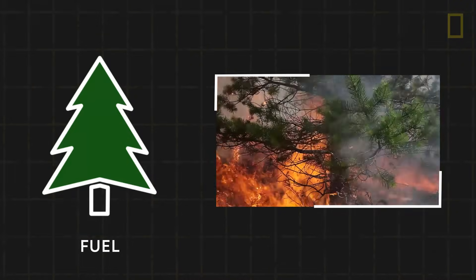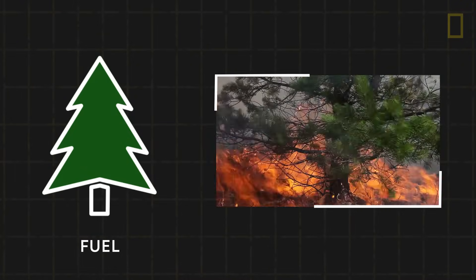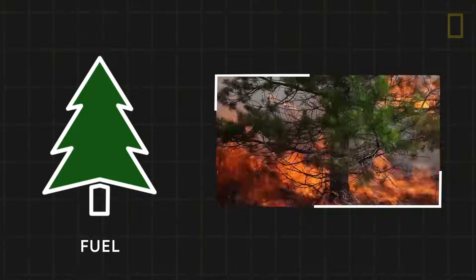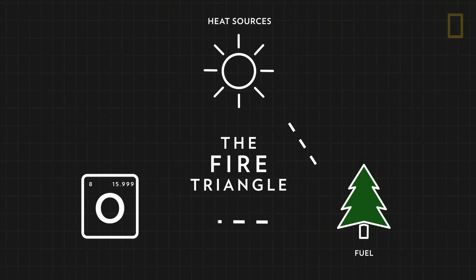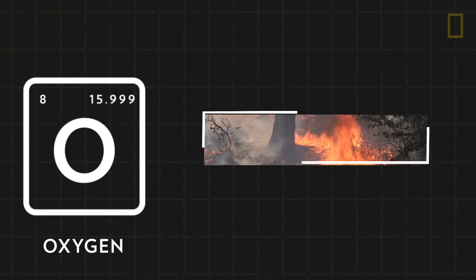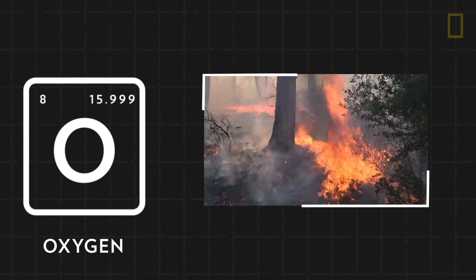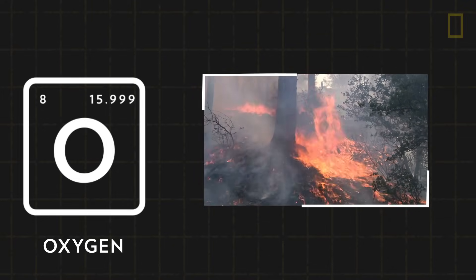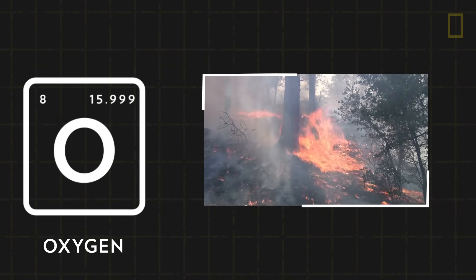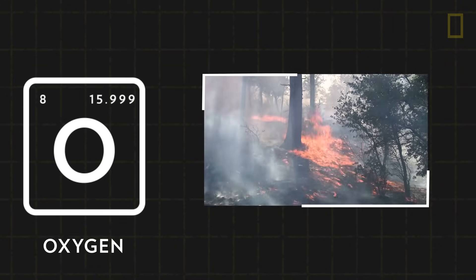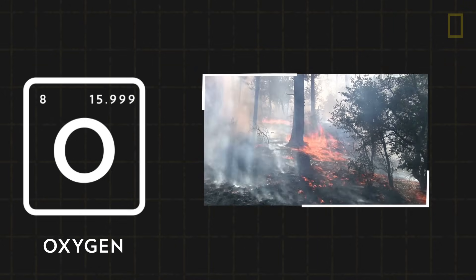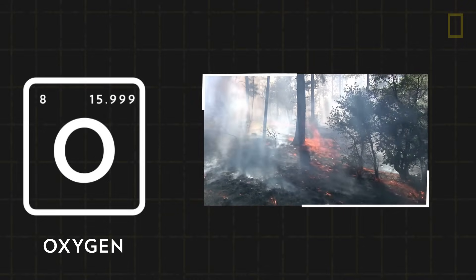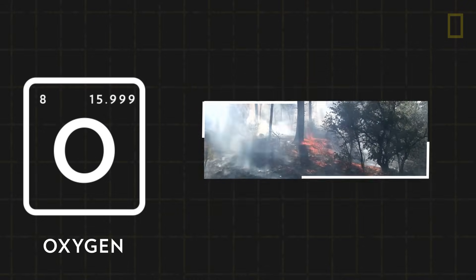Pine trees and other evergreens contain flammable oils that can burn when exposed to a heat source. As the fuel burns, the resulting flames feed and thrive off of oxygen. When air movement, or wind, occurs, not only is more oxygen supplied to the fire, but it may also help transport and spread the flames. Since wildfires occur outdoors, they have a nearly endless supply of oxygen from our atmosphere to burn.